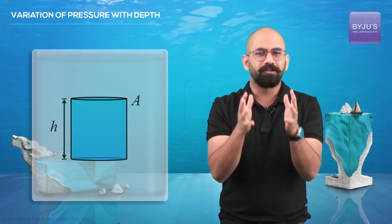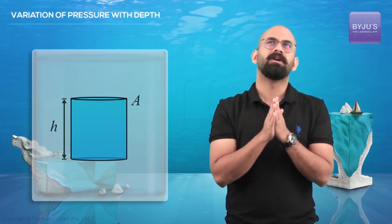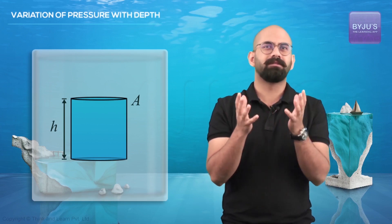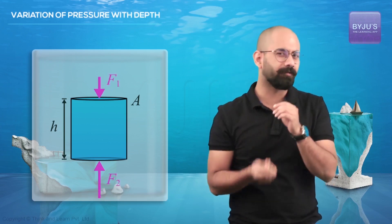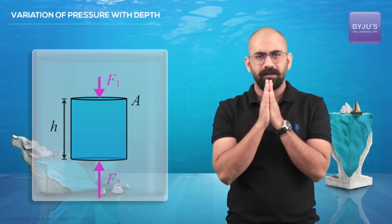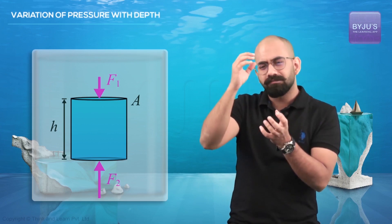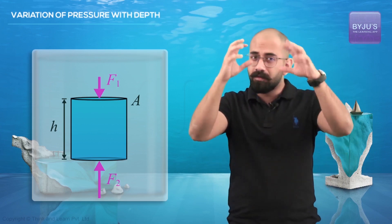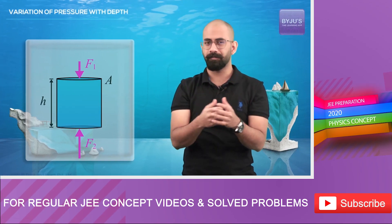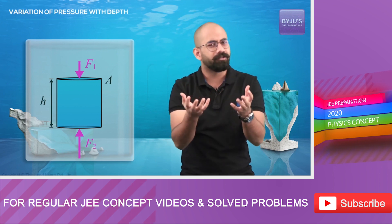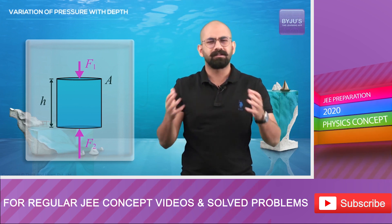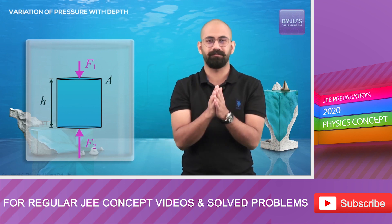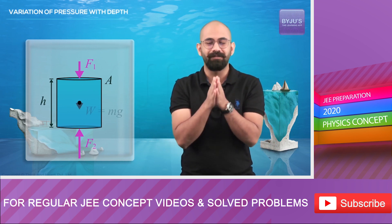What are the forces acting on it? Of course, there will be two forces — one from the top and one from the bottom. That is, there will be a force that the column above it is applying on it from the top. And of course, there will be a force from the bottom as well — we can say it's a normal force. What else? There should be one more force — of course, there will be gravity.